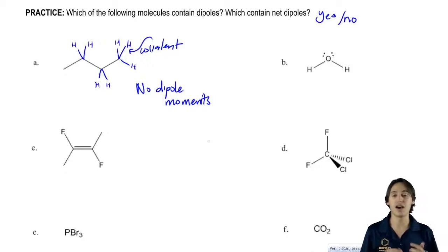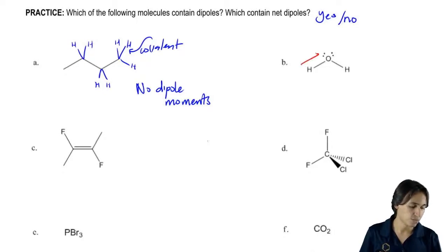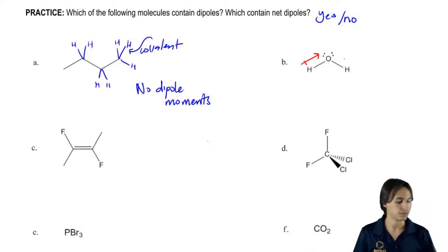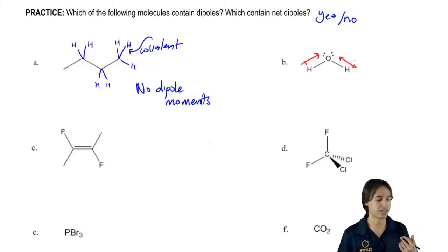So for B, I actually did have some dipoles. Oxygen is pulling at the hydrogen a little bit more than the hydrogen is able to pull back.